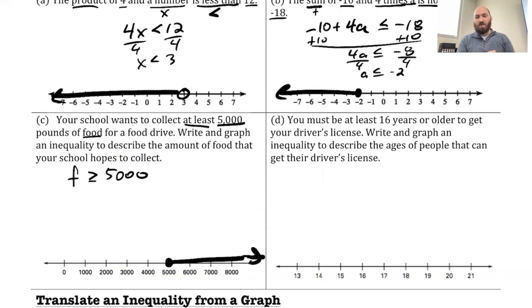You must be at least 16 years old to get your driver's license. Write and graph an inequality to describe the ages of people that can get their driver's license. So ages, I'm going to call that A for that. At least, we're seeing that again. So the age can be greater than or equal to 16. That's at least 16. So there's a closed circle on 16 and then off to the right.